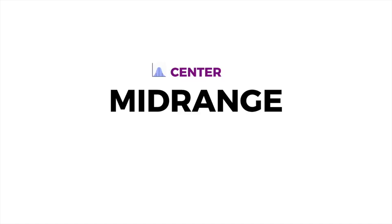Now we go to mid-range. Mid-range is an efficient estimator for the center of a distribution. If you only have the lowest value and the highest value in the data set, that's all you need to know. This is a combination of getting the range and the mean. You get the highest and lowest value, add them up, and divide by two.